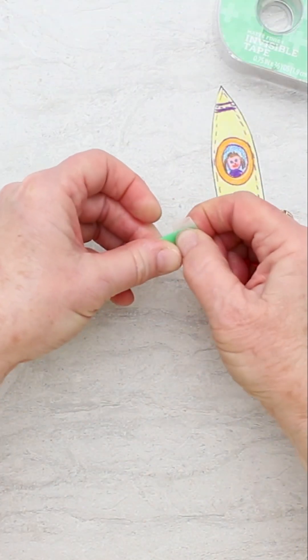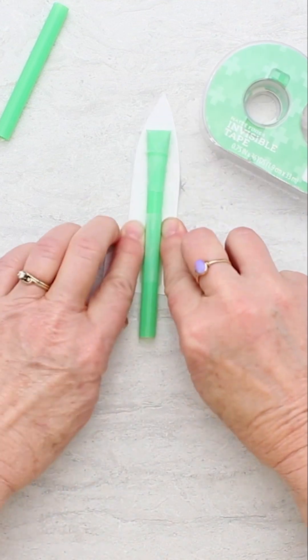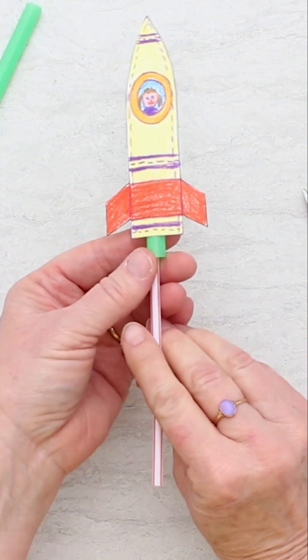Now we'll make rocket number two. Tape this to the back of our little rocket, then we'll be able to shoot it by blowing.